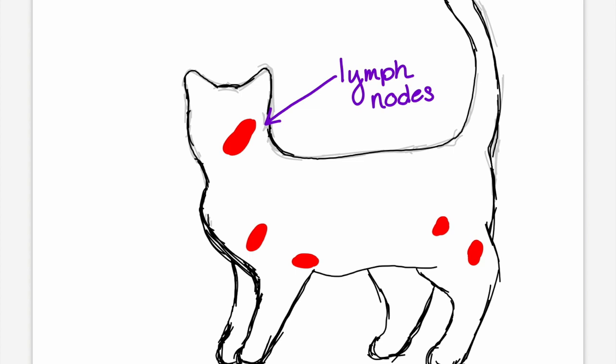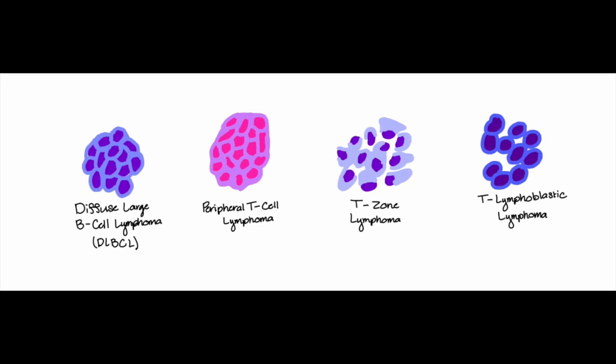Although there are many types of lymphoma, 85% of dogs' lymphoma is one of these four: Diffuse large B-cell lymphoma, 50%, peripheral T-cell lymphoma, 15%, T-zone lymphoma, 5-10%, and T-lymphoblastic lymphoma, 4%.